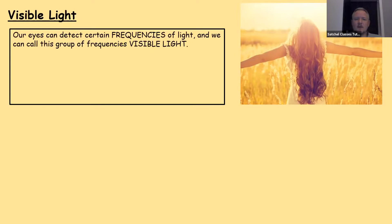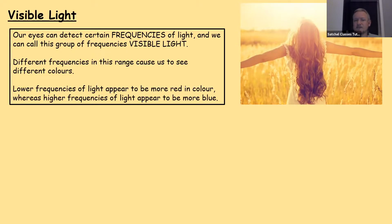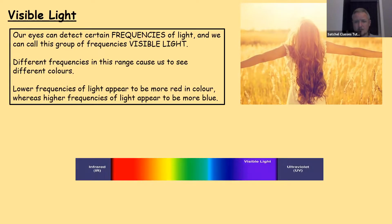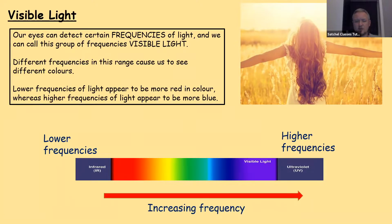So, start off with visible light then. Our eyes can detect certain frequencies of light and we call this particular group of frequencies visible light, because it's visible to us. Different frequencies in this range cause us to see different colours. Red has a different frequency to orange, which has a different frequency to yellow, and so on, all the way down to violet. Lower frequencies of light appear to be more red in colour. They lie towards the red end of the spectrum, whereas higher frequencies of light appear to be more blue.